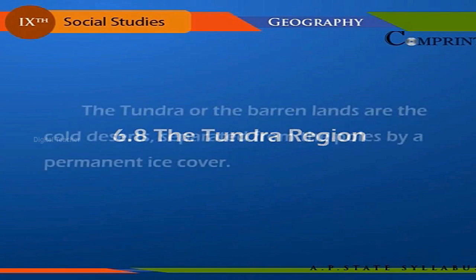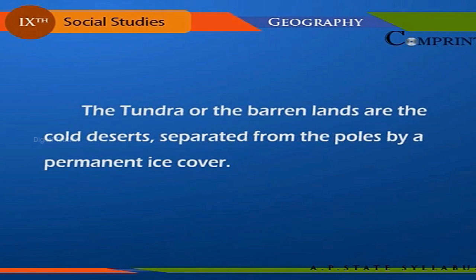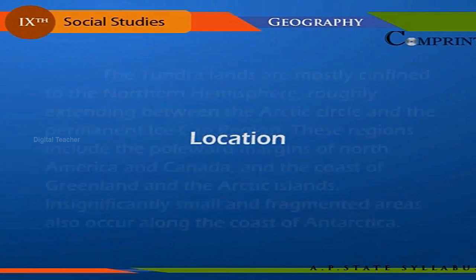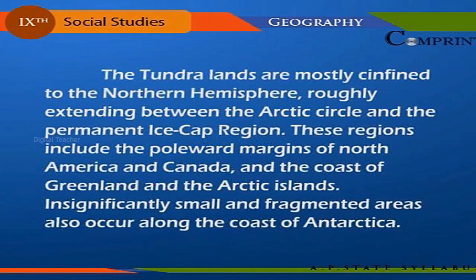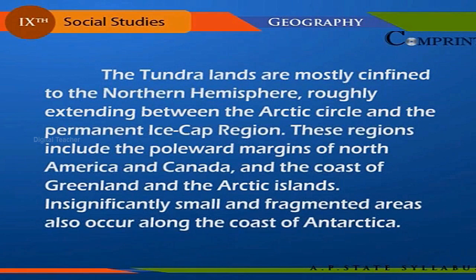The tundra, or the barren lands, are the cold deserts separated from the poles by a permanent ice cover. The tundra lands are mostly confined to the northern hemisphere, roughly extending between the Arctic Circle and the permanent ice cap region. These regions include the poleward margins of North America and Canada, and the coast of Greenland and the Arctic islands, with significantly small and fragmented areas also occurring along the coast of Antarctica.